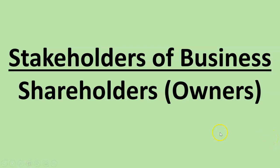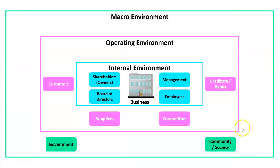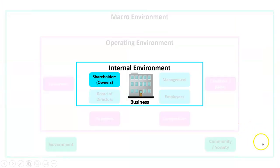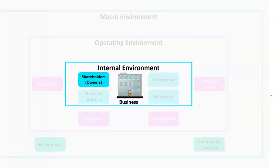One of the most important stakeholders of a business are the shareholders or the owners. We've looked at what that is, and we're looking at the internal environment here — that's a group that's very close to the business. They are the owners.